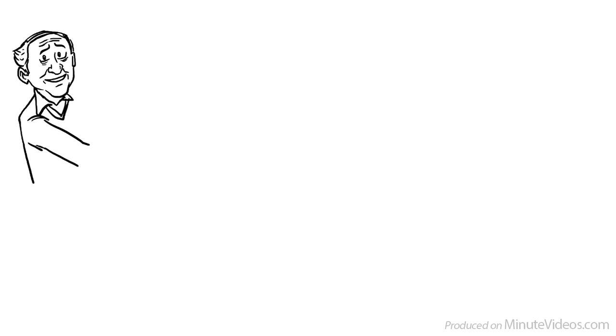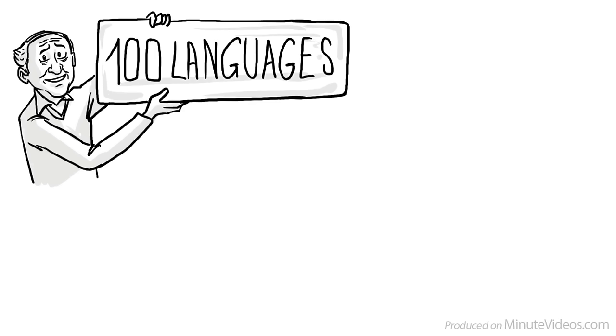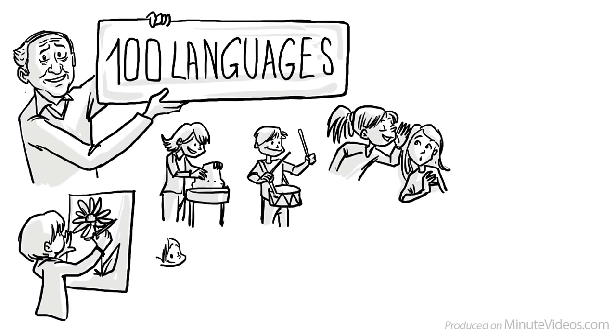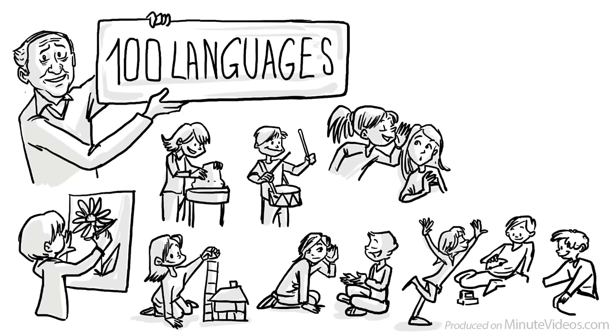Malaguzzi believed that there are 100 languages children can use to express themselves. They paint, sculpt, drum, whisper and bark. They build, listen, speak or sing and dance. And they play. Which Einstein allegedly said is the highest form of research.